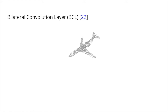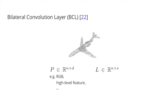For a point cloud with N points, the inputs to BCL consist of two sets of features: input features P and lattice features L. Input features P can be low-level features such as RGB colors, and can also be high-level features generated by previous neural network layers. Lattice features L define the lattice space in which convolution will operate. For standard 3D spatial filtering of point clouds, L is given as positional features XYZ at each point.